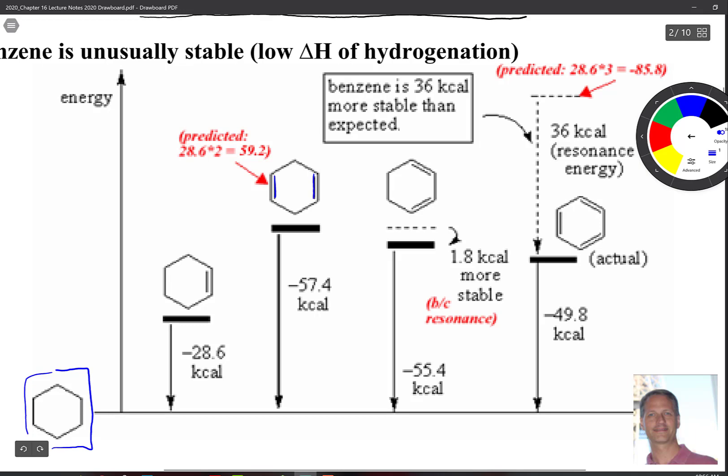Now if we put a double bond on the other side, that would be isolated double bonds because there is an sp3 carbon between the two of them. You get basically double - it's a little bit less than that, but 28.6 times 2 gives us 59.2 and the actual delta H is about negative 57.4. If we put the double bonds next to each other, we would expect that the delta H would go down a little bit because they're now conjugated. This is where we predict it to be, but it actually dropped down just a little bit because of resonance and conjugation.